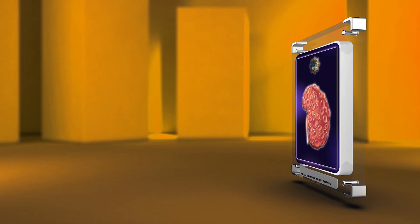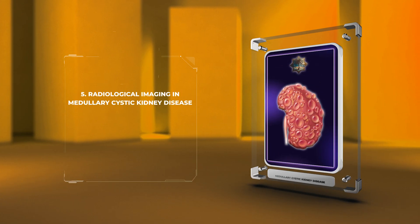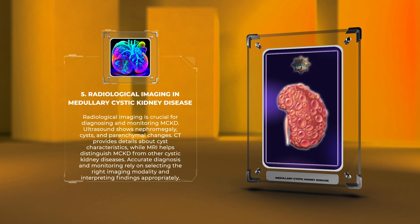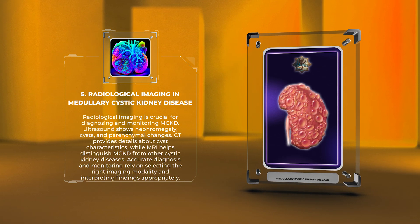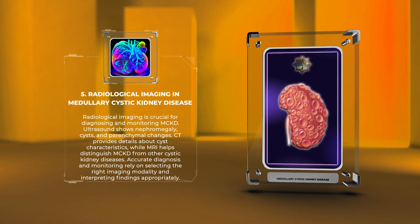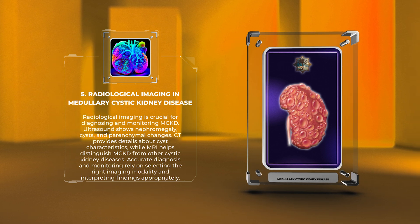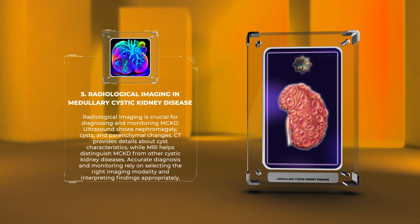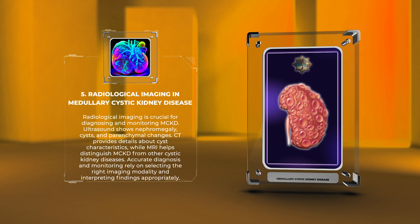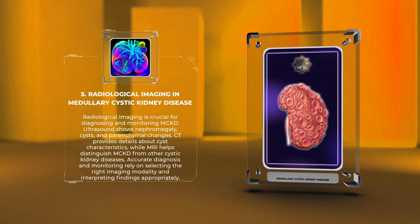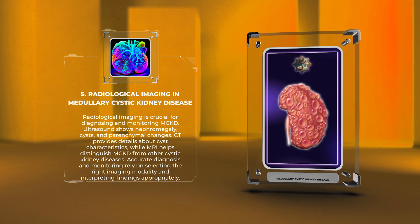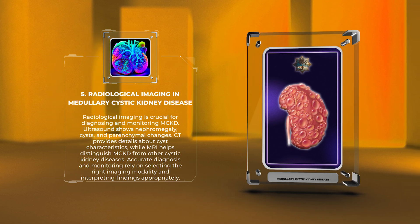Radiological imaging is crucial for diagnosing and monitoring MCKD. Ultrasound shows nephromegaly, cysts, and parenchymal changes. CT provides details about cyst characteristics, while MRI helps distinguish MCKD from other cystic kidney diseases. Accurate diagnosis and monitoring rely on selecting the right imaging modality and interpreting findings appropriately.